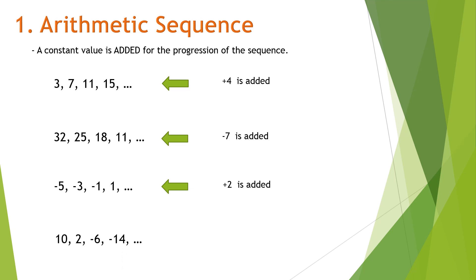Last example: 10, 2. As you can see from the first two terms, the number decreases, meaning the number being added is a negative number — specifically negative 8. So these are examples of arithmetic sequence.